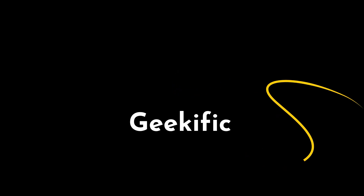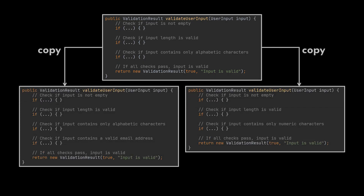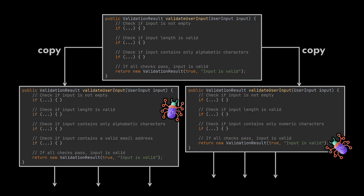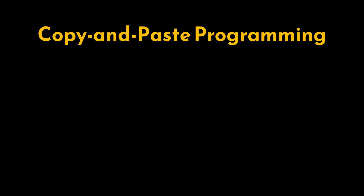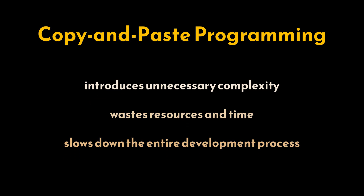Imagine you are part of a project where one developer creates a function to validate user input, but instead of abstracting it for reuse, the rest of the team copies and pastes the same function across different parts of the application, adding minor tweaks. Each version slightly diverges from the original, introducing small bugs or inefficiencies that accumulate over time. This type of programming, referred to as copy and paste programming, introduces unnecessary complexity and wastes resources.